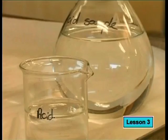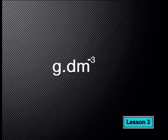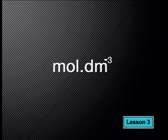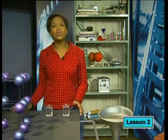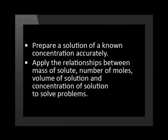There are two ways of expressing the concentration of a solution. One way is to measure the number of grams of solute divided by the volume of the solution, expressed in grams per decimeter cubed. The second way is to work out the number of moles of solute divided by the volume of the solution, expressed in moles per decimeter cubed. By the end of this lesson, you should be able to prepare a solution of known concentration and apply the relationships between mass of solute, number of moles, volume, and concentration to solve problems.